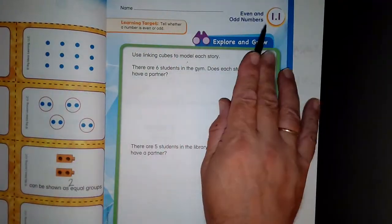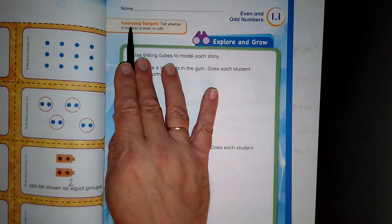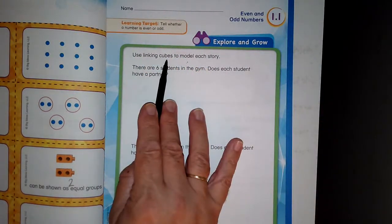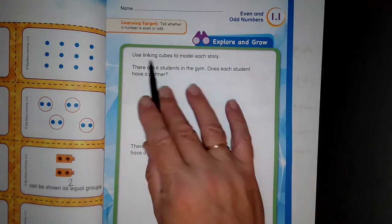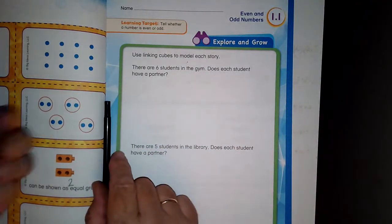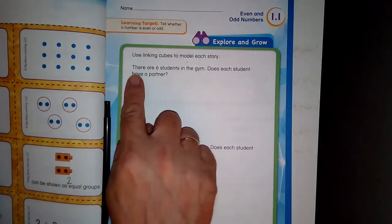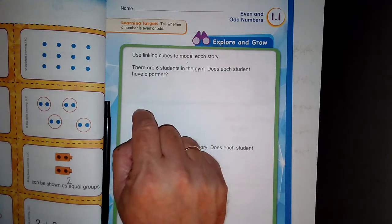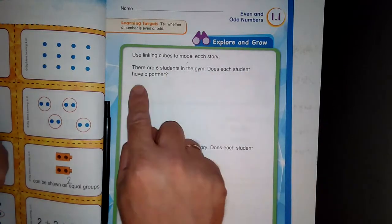And here is lesson 1.1. Our learning target for today is tell whether a number is even or odd. Now, it says use linking cubes, but you can just use whatever you have around. Use linking cubes to model each story. Now, what I'm going to do is I'm going to put some things out. I just grabbed some buttons, and I'm going to put some out, and each one is going to represent one of the students in the gym. So, it says there are six students in the gym. Does each student have a partner?